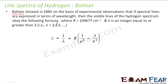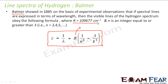Balmer said that the wavelength associated with these spectral lines will obey the formula: 1 by lambda is equal to R into 1 by n squared minus 1 by 2 squared. R is the Rydberg's constant whose value is 109677 cm inverse. The wavelength of this particular series of lines satisfies this equation, where n1 is the energy level from where the electron falls and n2 is the energy level to where it jumps.